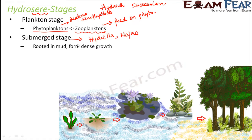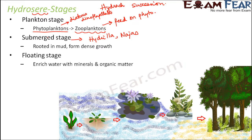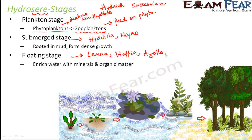As the stages progress, the bottom level slowly rises up. The next stage is the floating stage, where floating-leaved plants are seen in areas with shallow water. Examples of such plants include lemna, wolfia, azolla, and Eichhornia.